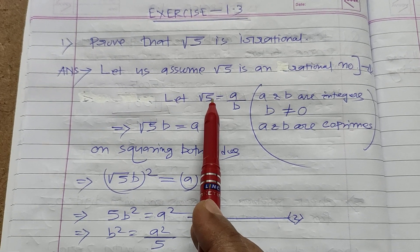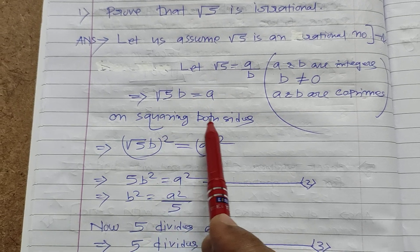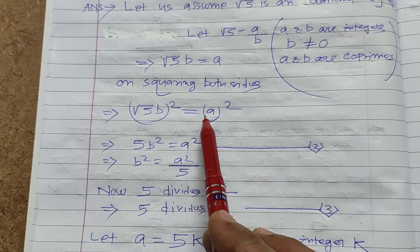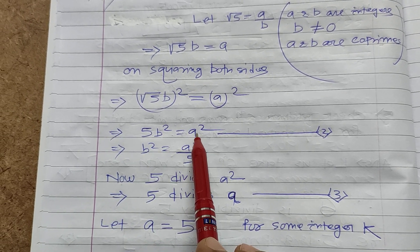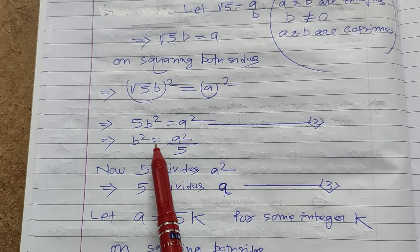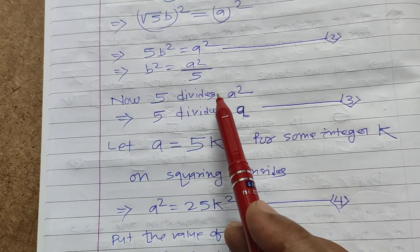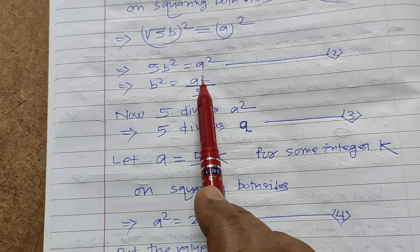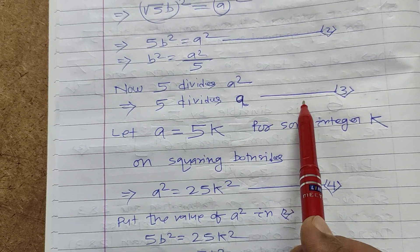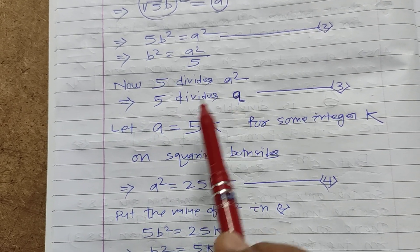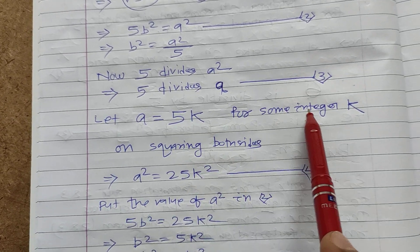By cross multiplication, root 5 times b is equal to a. On squaring both sides, (root 5 times b) whole square is equal to a square. Therefore, 5b square is equal to a square, which implies b square is equal to a square divided by 5. Now, 5 divides a square, which implies 5 divides a by a known theorem. If 5 divides a, we can write a is equal to 5k for some integer k.